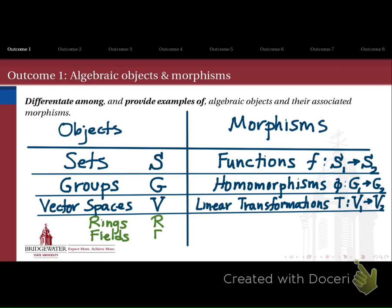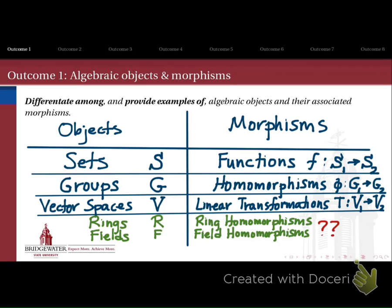In Abstract Algebra 2, we're going to meet different kinds of objects. Specifically, the kinds of objects we'll be most concerned with this semester are rings and fields, and each of those kinds of objects will have its own kind of morphism. Rings will have ring homomorphisms, and fields will have field homomorphisms. We'll want to know the differences between these things, and their connections to sets, groups, and vector spaces.